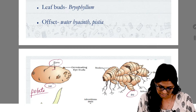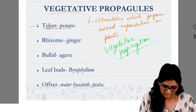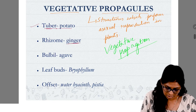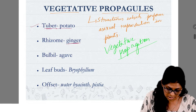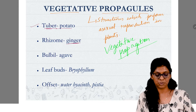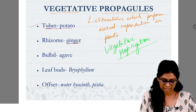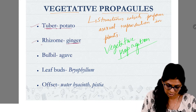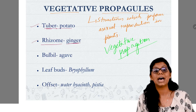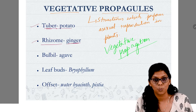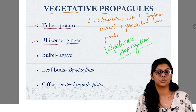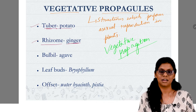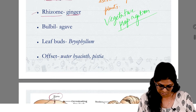Then this is ginger. In ginger, the vegetative propagation structure — what do we call it? Rhizome. That is known as rhizome.